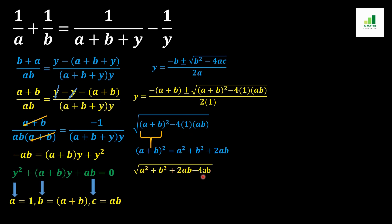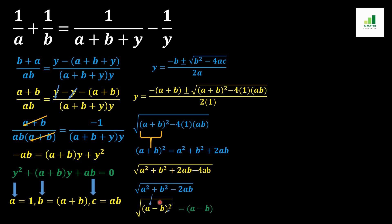Now +2ab and -4ab simplify to give a² + b² - 2ab, because -4 + 2 = -2. We can see this equals the (a-b)² formula, so this value replaces with (a-b)². The square root and the square cancel, and (a-b) comes out of the root.